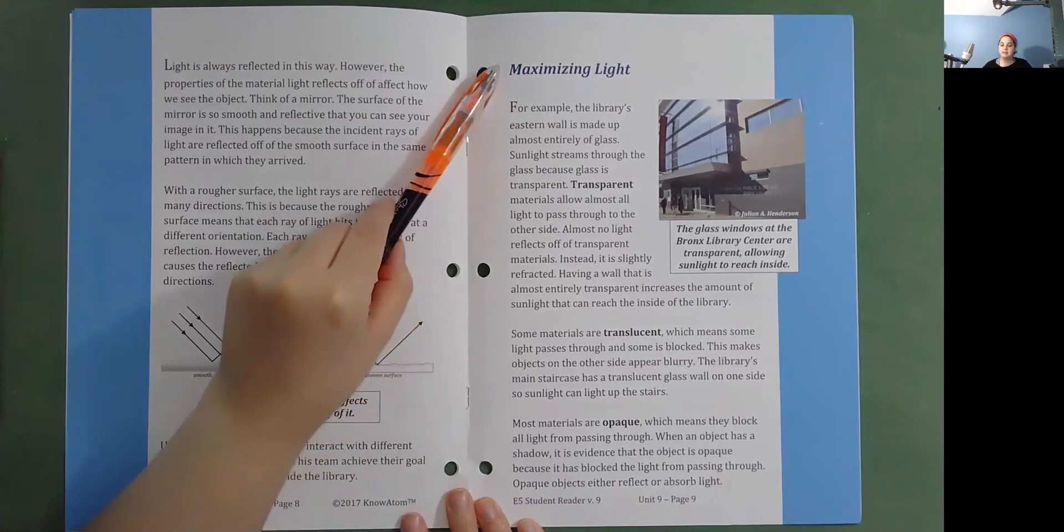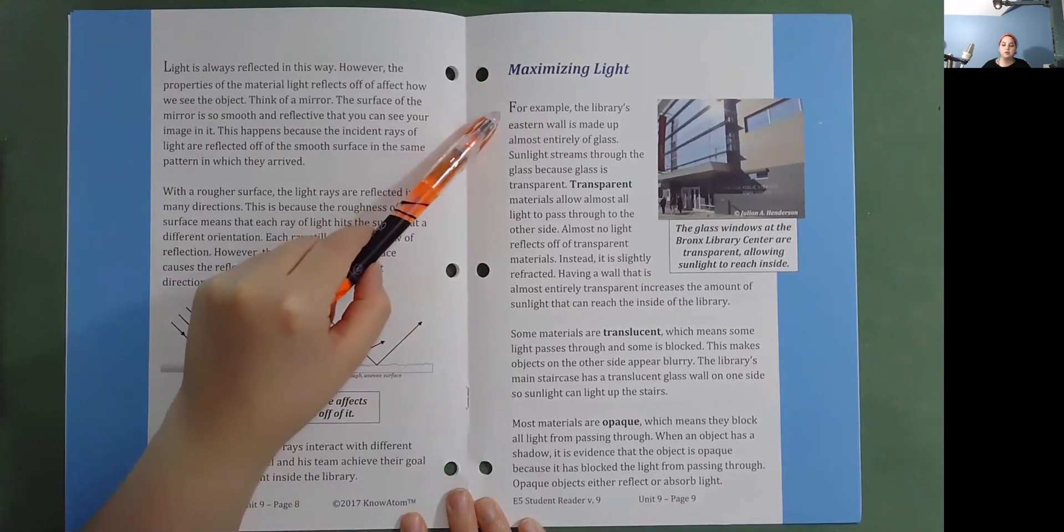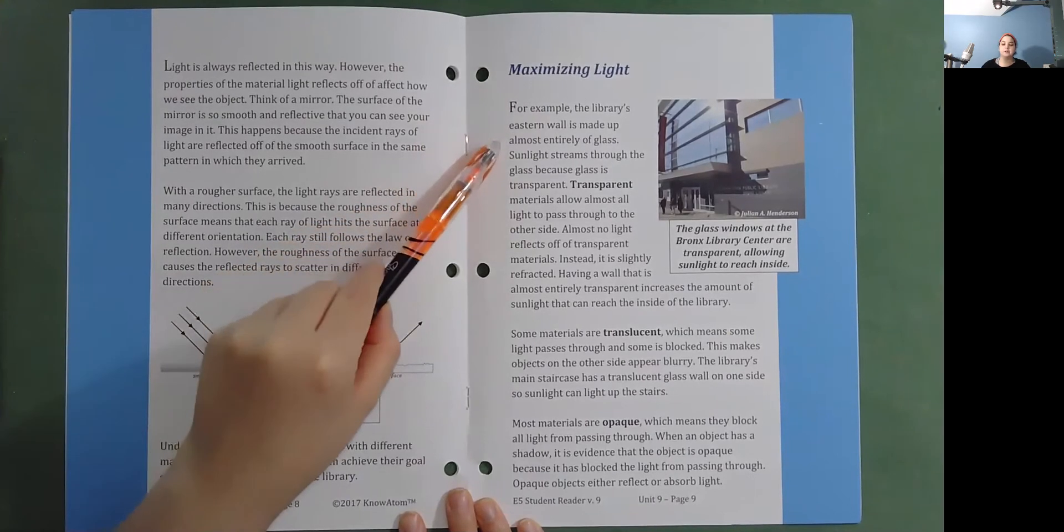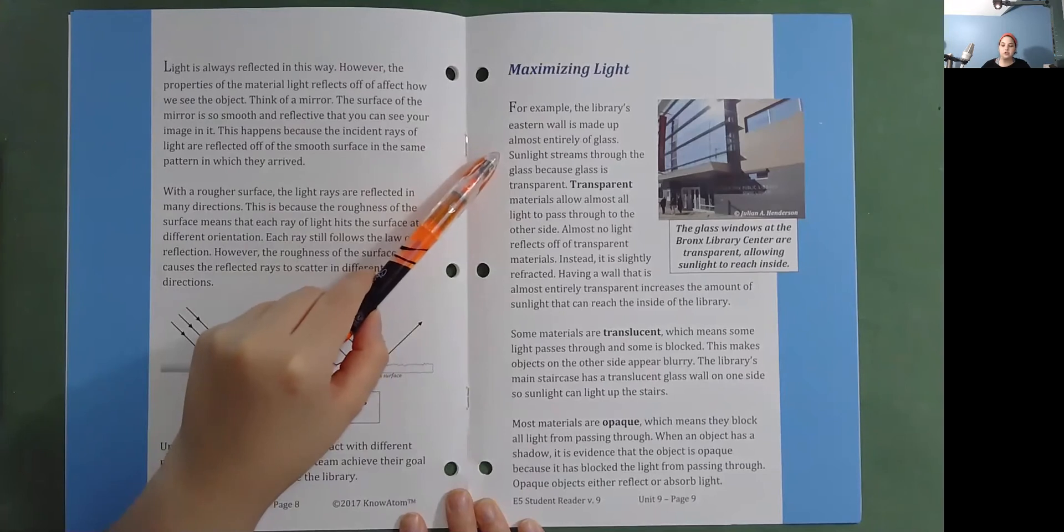Maximizing light. For example, the library's eastern wall is made up almost entirely of glass. Sunlight streams through the glass because glass is transparent.